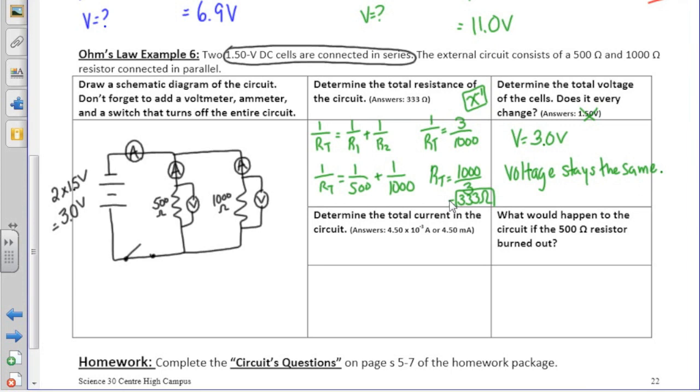The next question asks us to determine the total current in the circuit. Current is represented by I. Our total voltage in this question is 3.0 volts, and our total resistance, as we determined above, is 333 ohms. If we rearrange Ohm's law, we will find that current equals voltage divided by resistance, and if we put that into our calculator, we will end up with 0.00900 amps, or in scientific notation, 9.01 times 10 to the negative 3 amps.